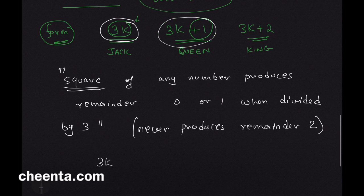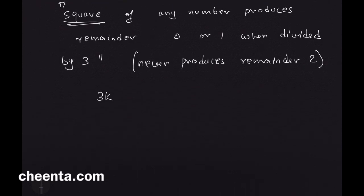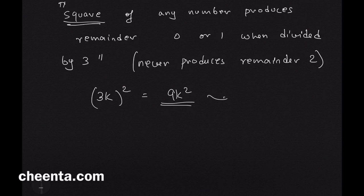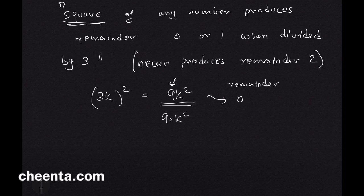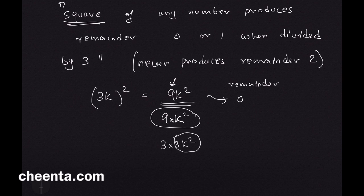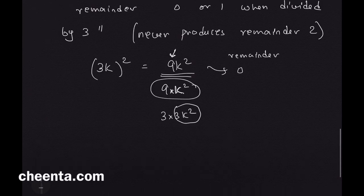To prove this, you experiment with all three types of numbers. First, take the form 3k and square it to get 9k². If you divide 9k² by 3, the remainder is 0, because it's divisible by 3 — in fact it's divisible by 9 since it equals 9 times k². Anything divisible by 9 is divisible by 3, and 9k² can be written as 3 times 3k².